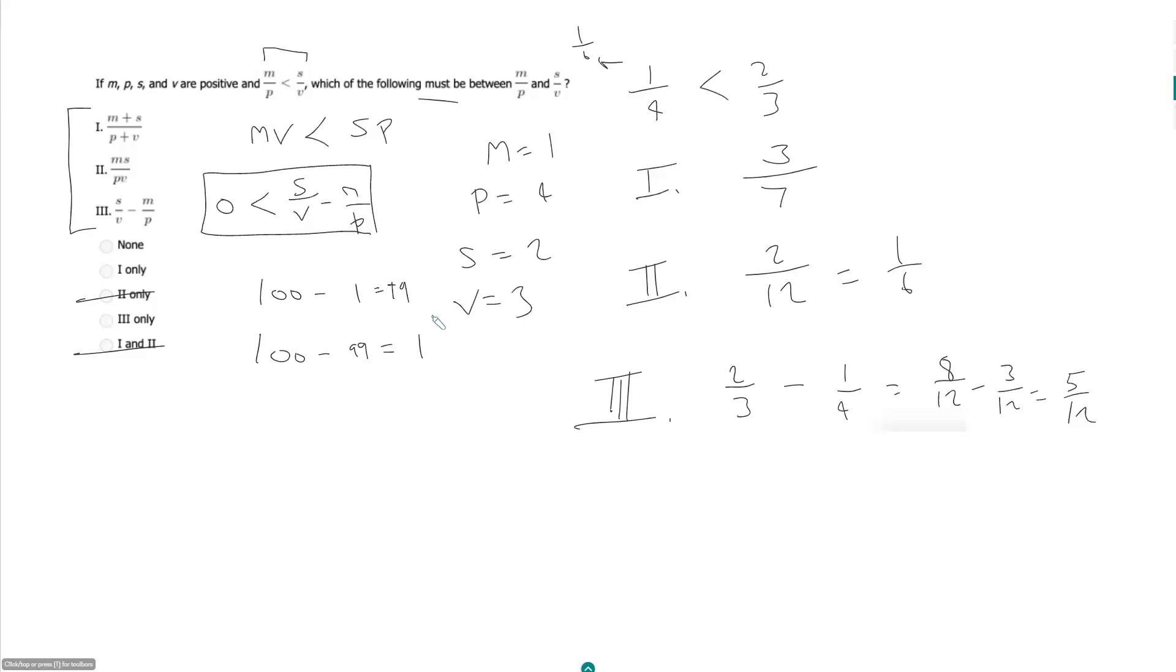Let's say I'll make m over p, 8 out of 10. And let's make s over v, 19 out of 20. So in this case, s over v minus m over p is going to give me 1 over 20.